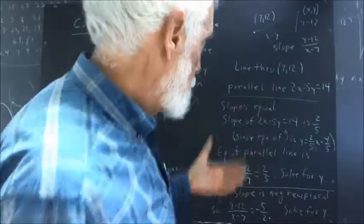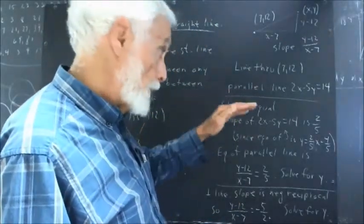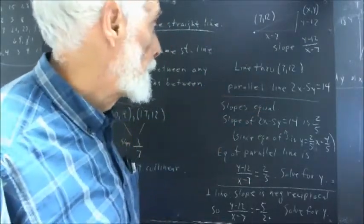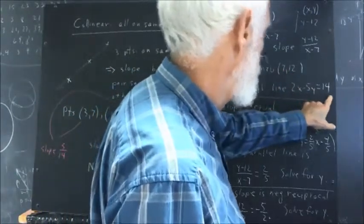Now, what does it mean for a line to be parallel to another? It means that their slopes are going to be identical. Lines are parallel if their slopes are the same. So we want to find a line through 7,12 whose slope is equal to this one.